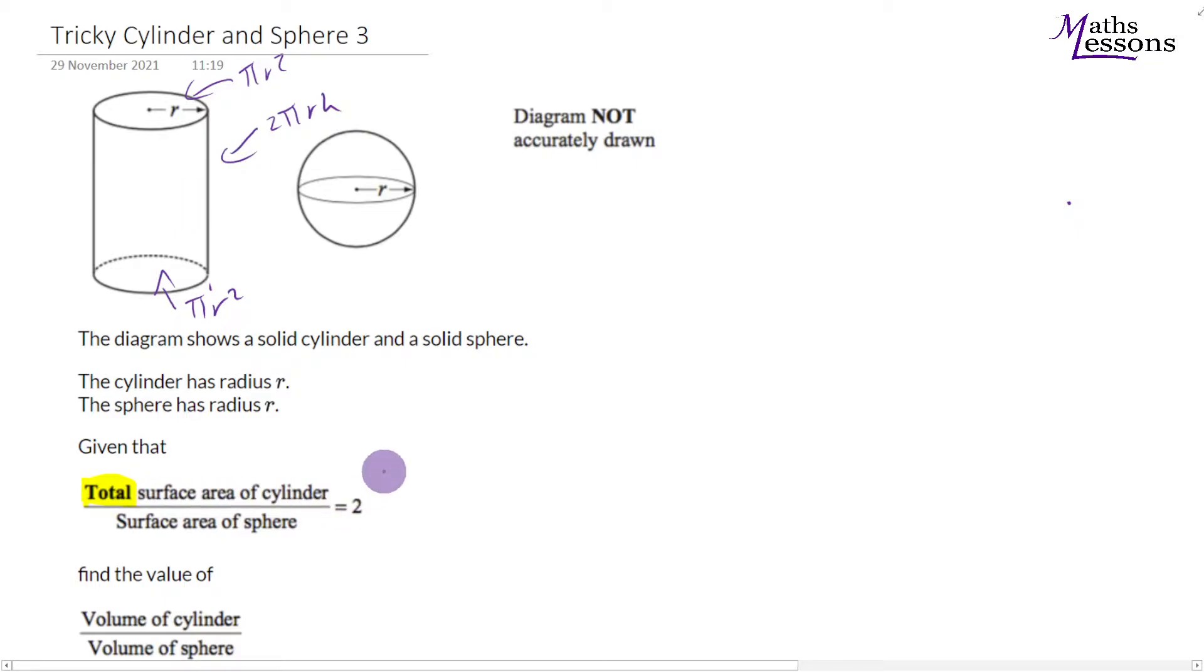So let's work out the total surface area of the cylinder over the surface area of the sphere. Surface area of the cylinder is going to be pi r squared plus pi r squared, which gives me two pi r squared, and we've got to add on the two pi r h. And we've got that all over the surface area of the sphere, so that's four pi r squared for the formula for that.